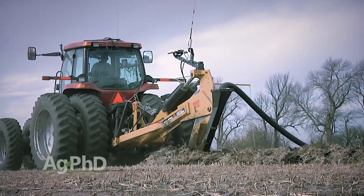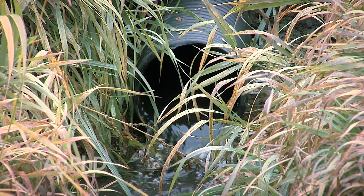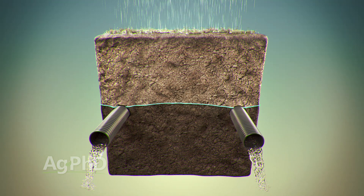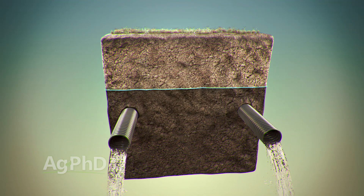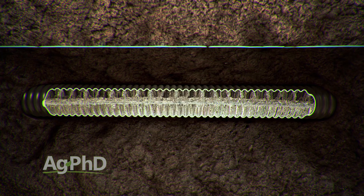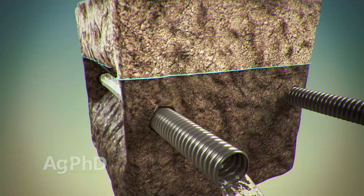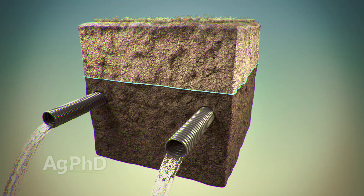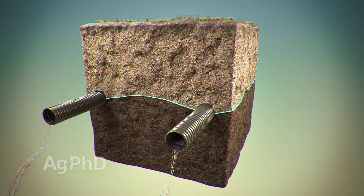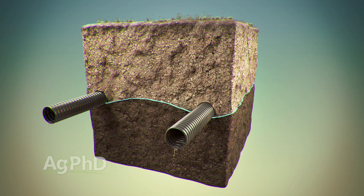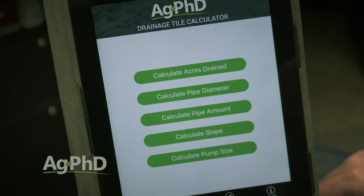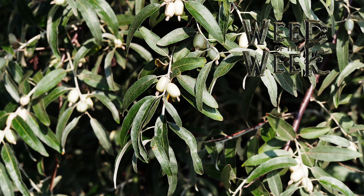Drainage is certainly going to be a hot topic this fall, and on our farm we're going to be improving drainage on some fields. The payback is so quick that even in today's economy, bankers across the country are very excited about drainage improvements on land because it reduces risk and returns money quickly — in just a year or two in many cases. Bankers are looking for things like this to put their money into on the farm. The Ag PhD Drainage Calculator is a great tool to help you. Another thing that can help you earn more money is improving weed control, especially if you've got our Weed of the Week.